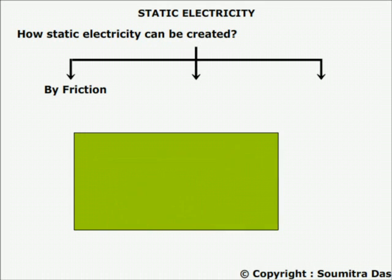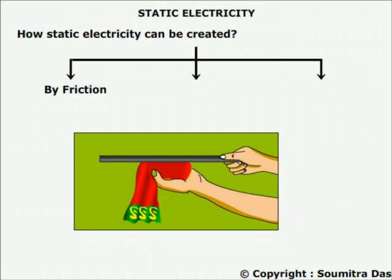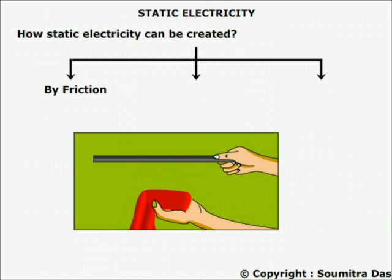When a PVC rod is rubbed against silk, the PVC rod acquires negative charge and the silk acquires positive charge. This is called the triboelectric effect.